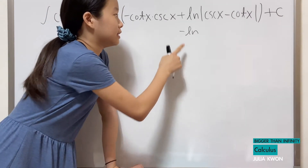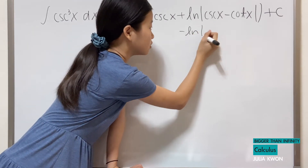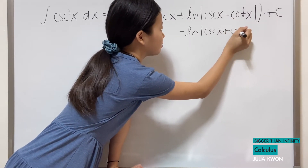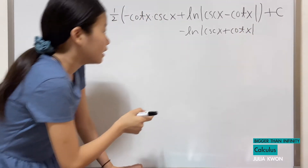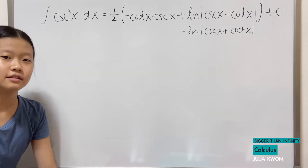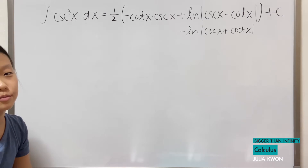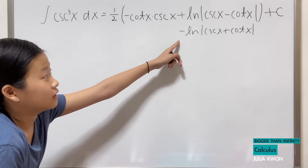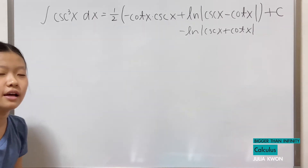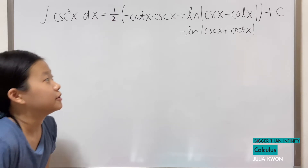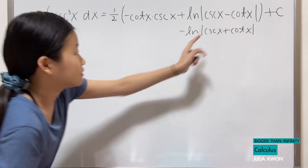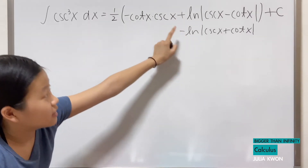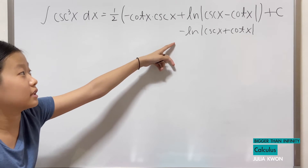This is correct, except that if it's going to be negative ln, it will have to be the absolute value of cosecant x plus cotangent x. So these two answers are both correct, but I think if you search for the integral of cosecant cubed x dx online, most results will have negative ln of the absolute value of cosecant x plus cotangent x. So I guess that's how the viewer got confused — maybe he or she didn't see the negative sign.